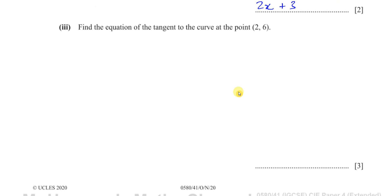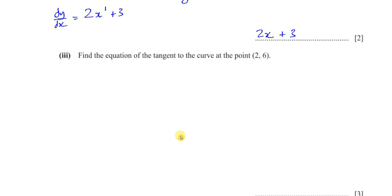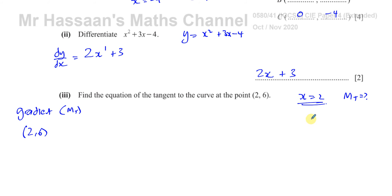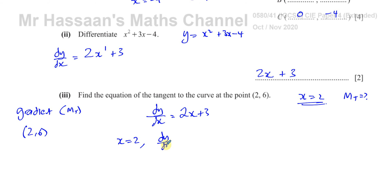To find the equation of the tangent, which is a straight line, we need two things: the gradient of the tangent and a point on the line. We have the point (2, 6). dy/dx is the gradient function — it tells us the gradient of the original function. When x equals 2, dy/dx is 2 times 2 plus 3, which is 7. Therefore the gradient of the tangent equals 7.